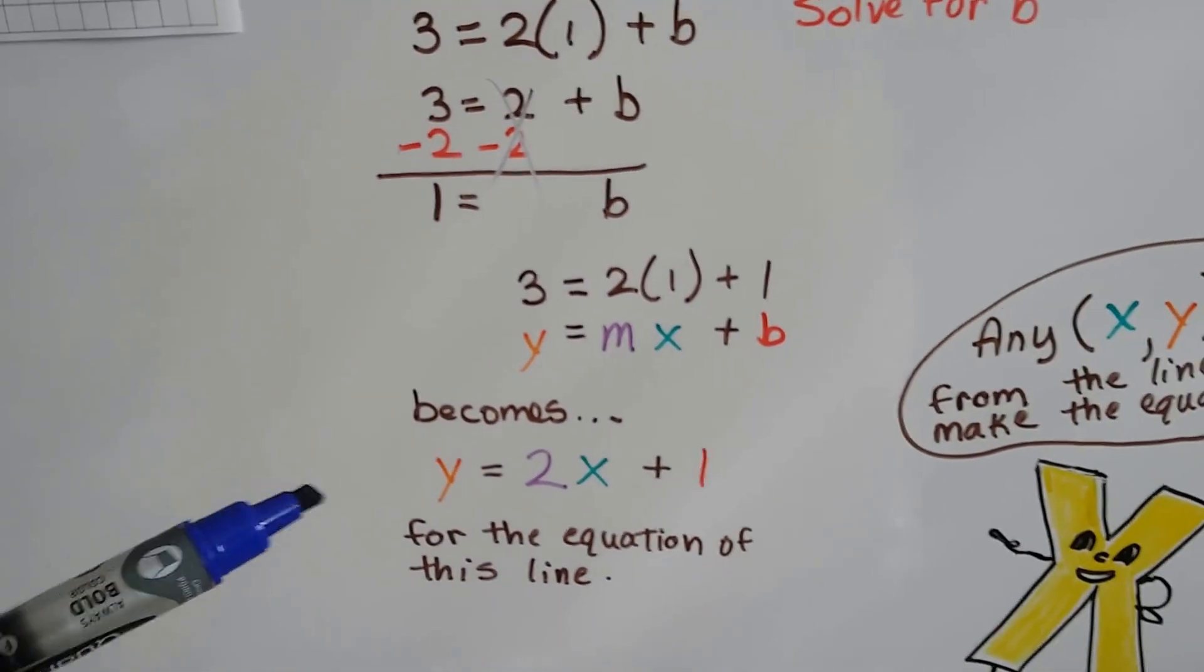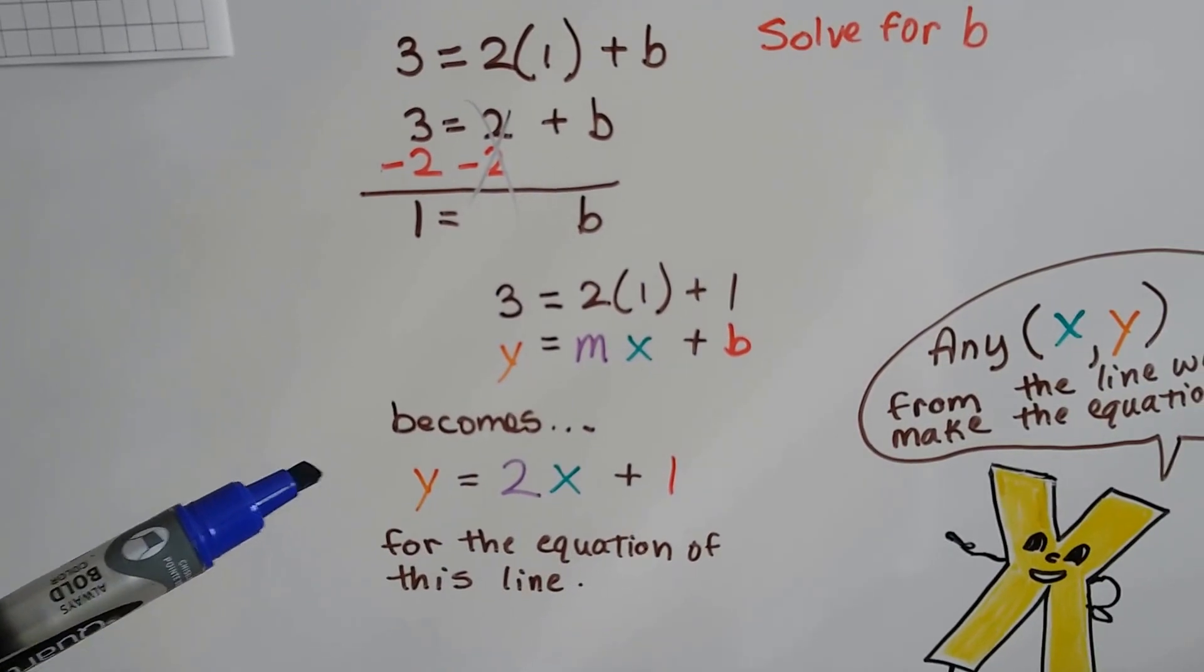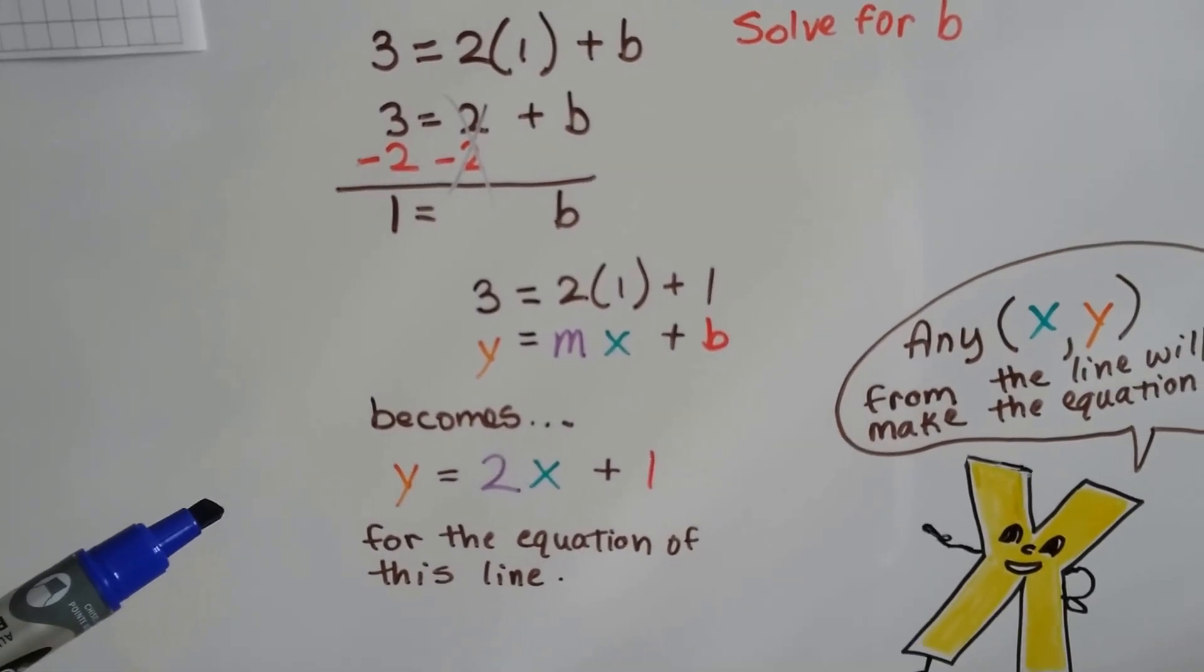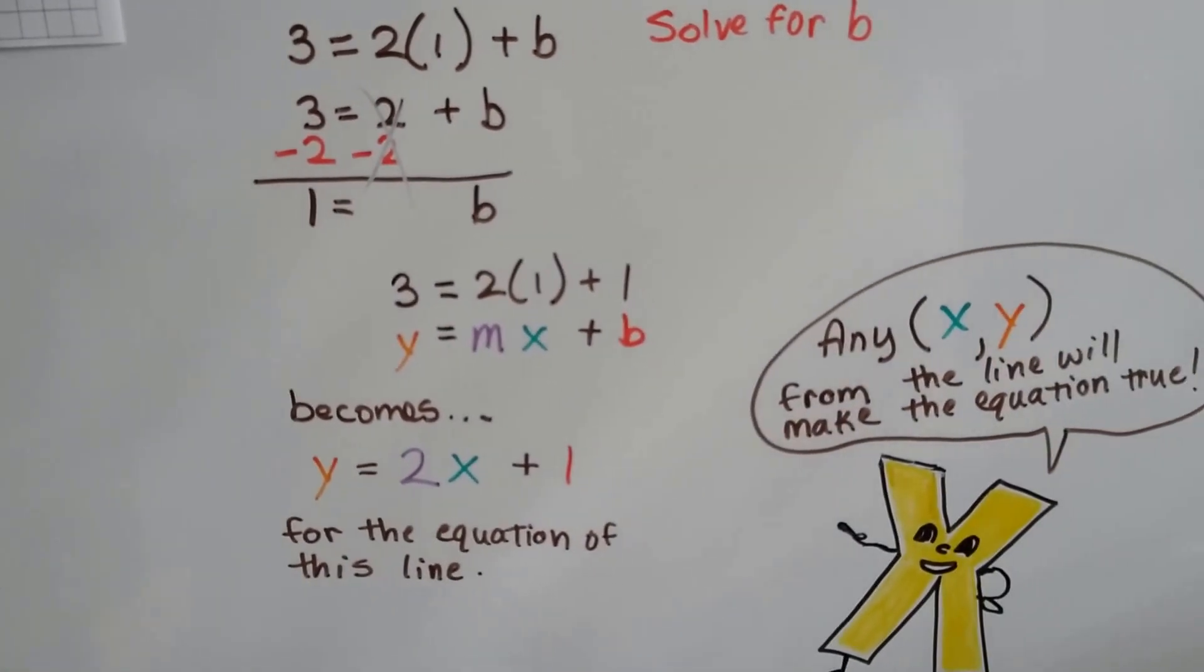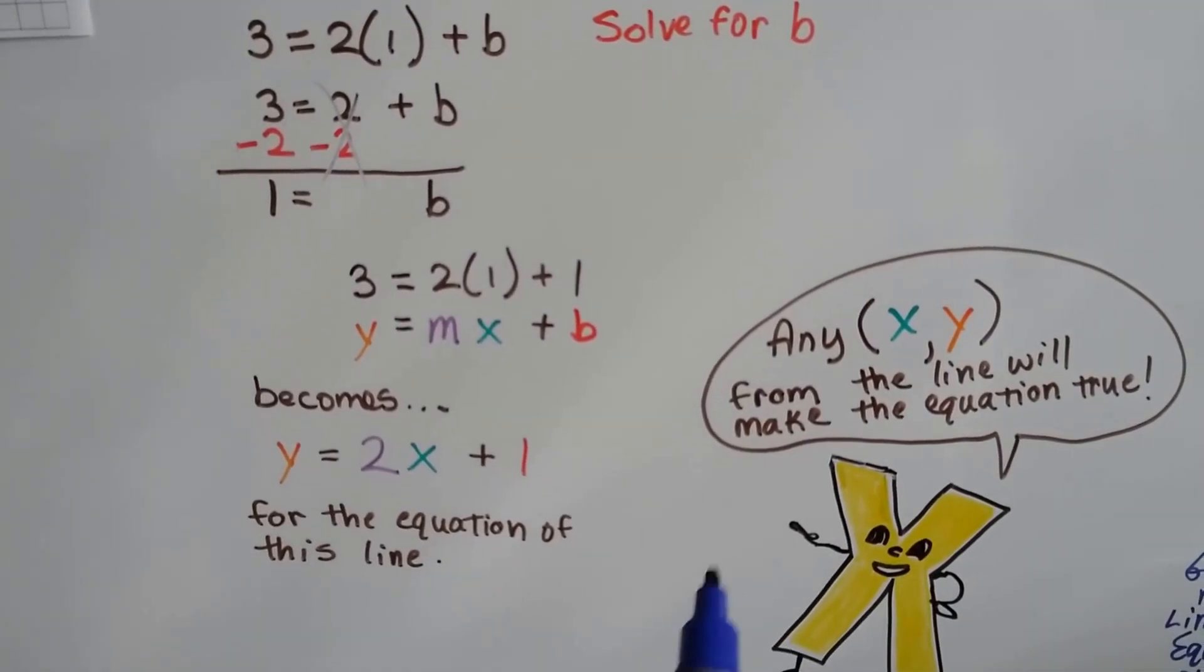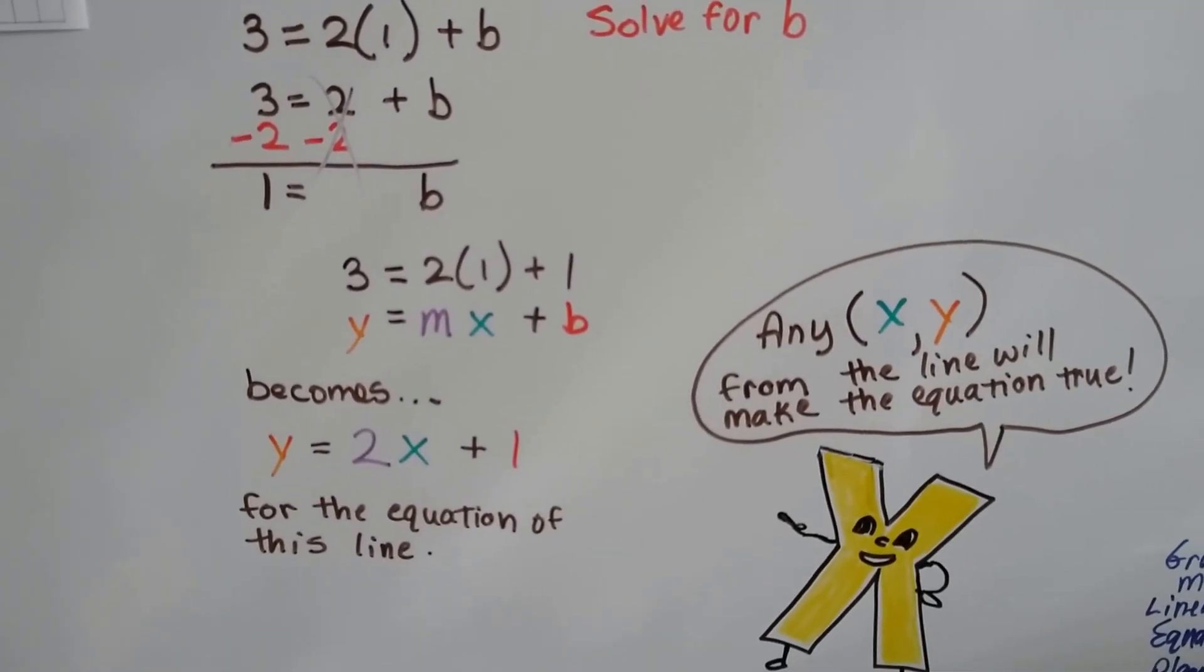And to become an equation for this line, it becomes y equals 2x plus 1. And any xy point from the line will make this equation true. Isn't that cool?